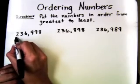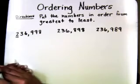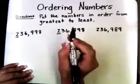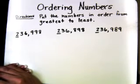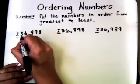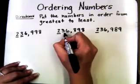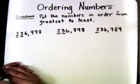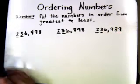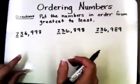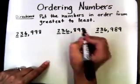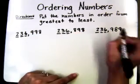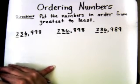In the hundred thousands place in this number we have a 2, a 2 in the hundred thousands place in this number, and a 2 in the hundred thousands place in this number — that doesn't tell us much. In the ten thousands place we have a 3 in all three numbers. We still don't know enough. In the thousands place we have a 6 in all three numbers. Still not sure.